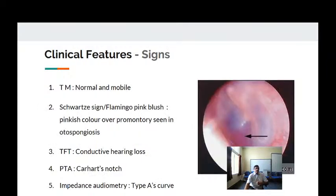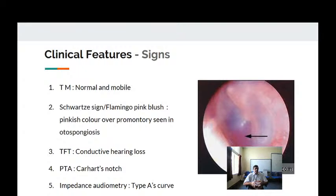On clinical examination, the tympanic membrane is usually normal. However, when there is an active focus of otosclerosis, the spongy bone interspersed with blood vessels on the promontory produces a pink or red coloration visible through the tympanic membrane — this is called the Schwartze sign or flamingo pink blush.